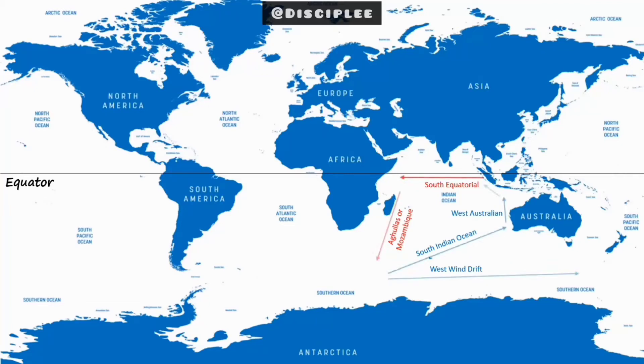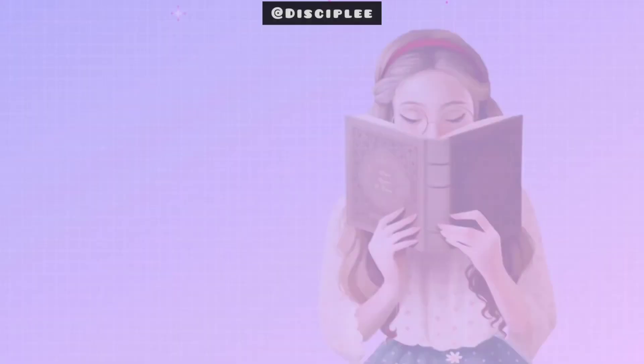In the North Indian Ocean, there is complete reversal of the direction of currents between summer and winter due to changes of monsoon winds.